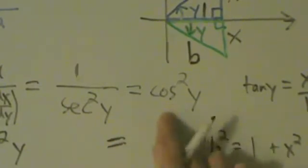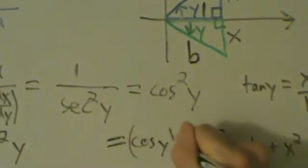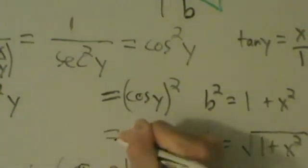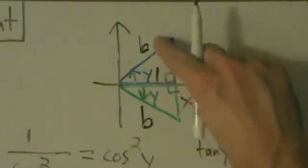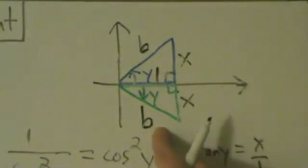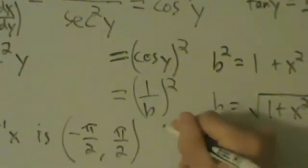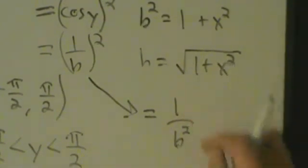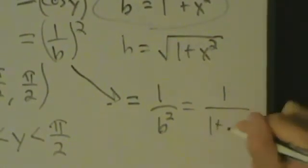So we're ready to answer: what is cosine squared of y? Cosine of y is adjacent over hypotenuse. In the upper triangle that's 1 over b; in the lower triangle it's also 1 over b — great, the same thing in both cases. So cosine squared of y equals 1 over b, quantity squared, which equals 1 squared over b squared equals 1 over 1 plus x squared.